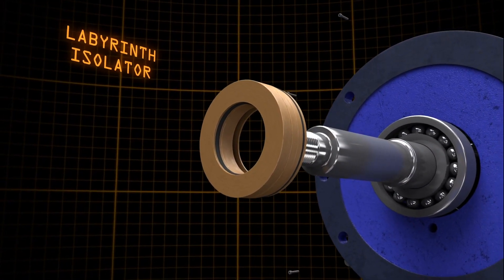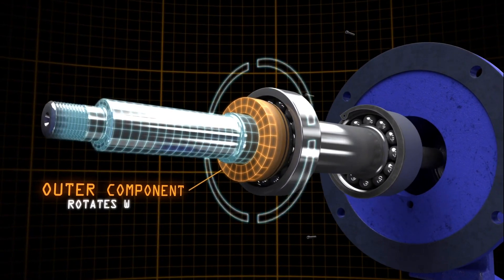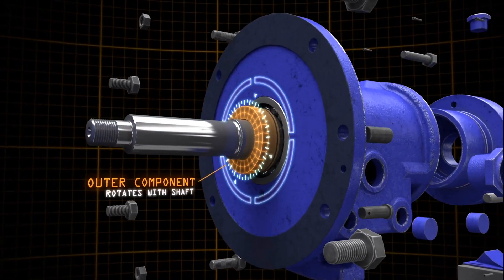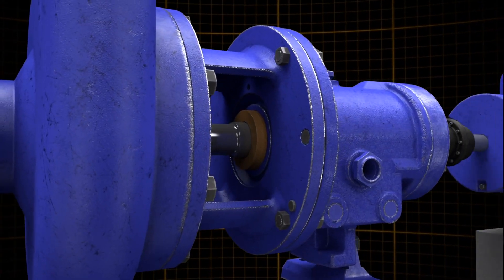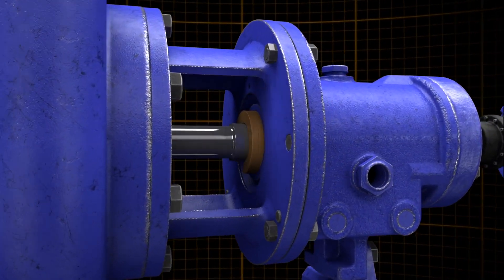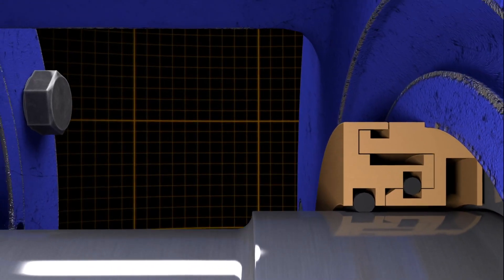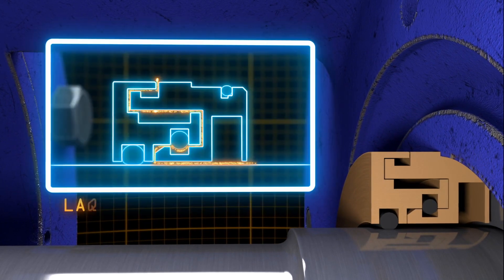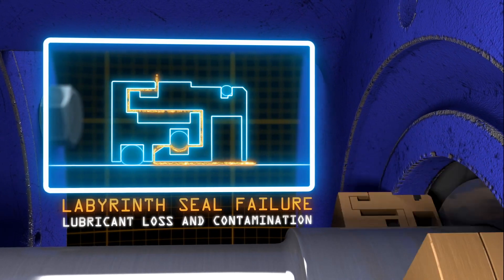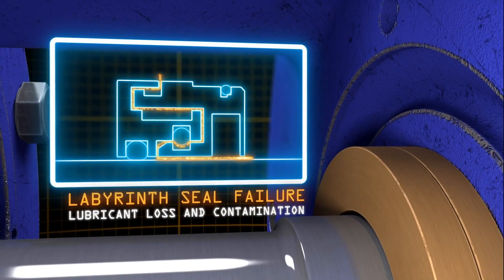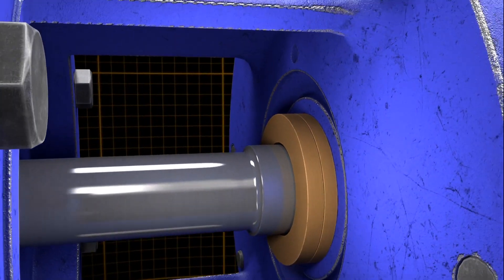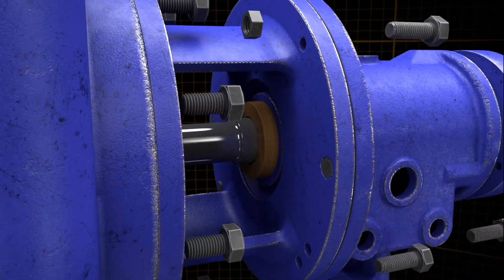Labyrinth isolators added an outer component that rotates with the shaft, solving the shaft wear issue, but replacing the positive seal with a close clearance open path. Since this open path provided a route for contaminants to enter and lubricants to escape, labyrinth seals required frequent and expensive oil changes.